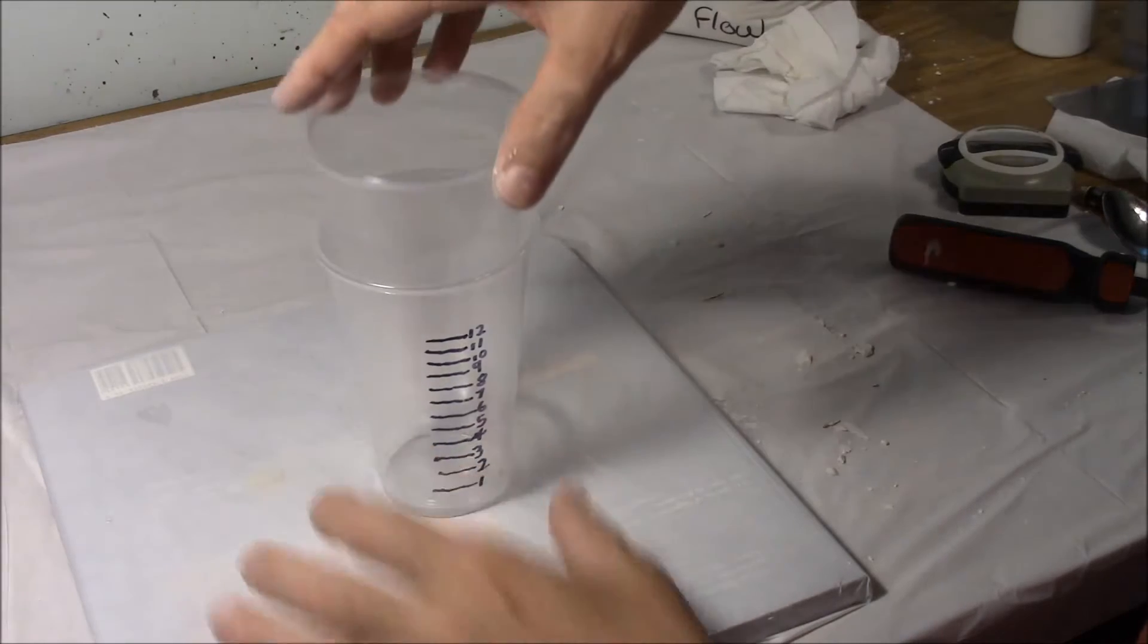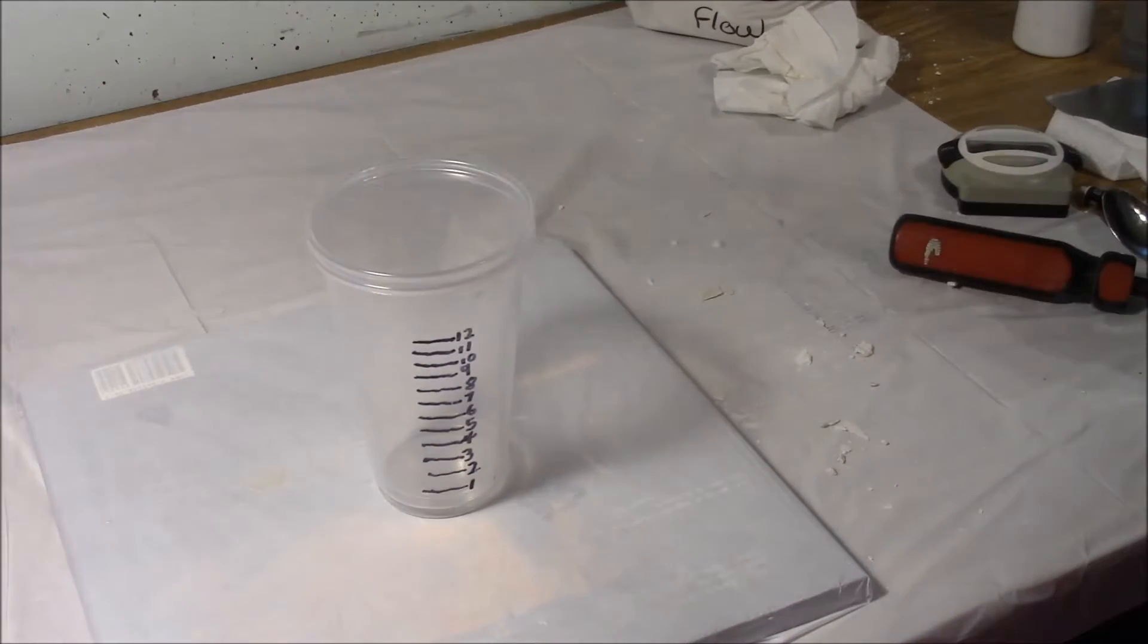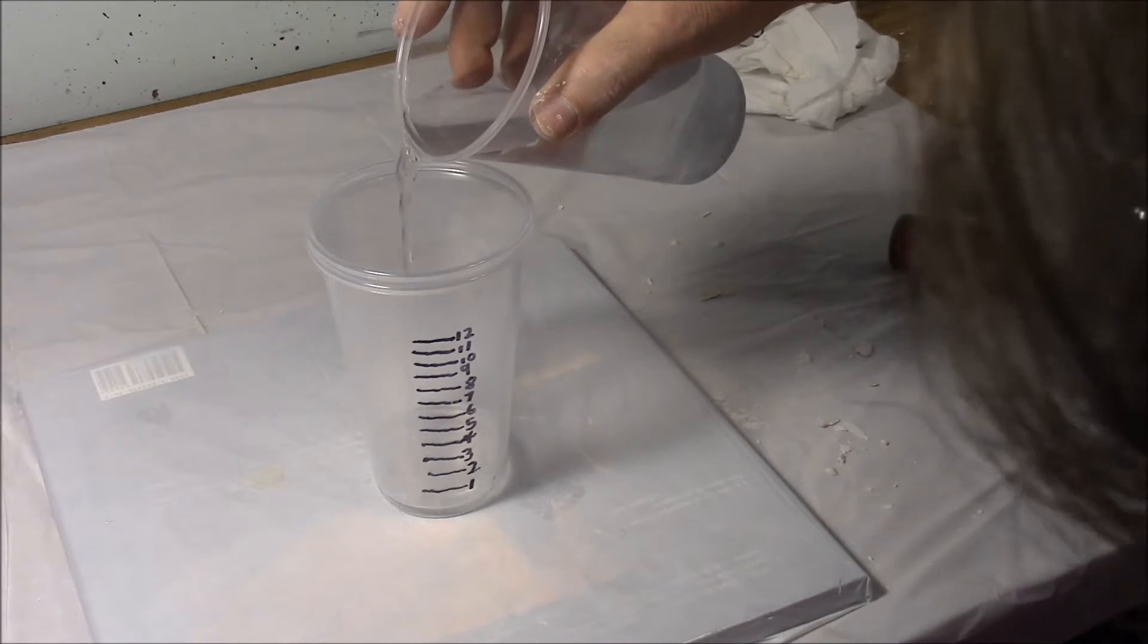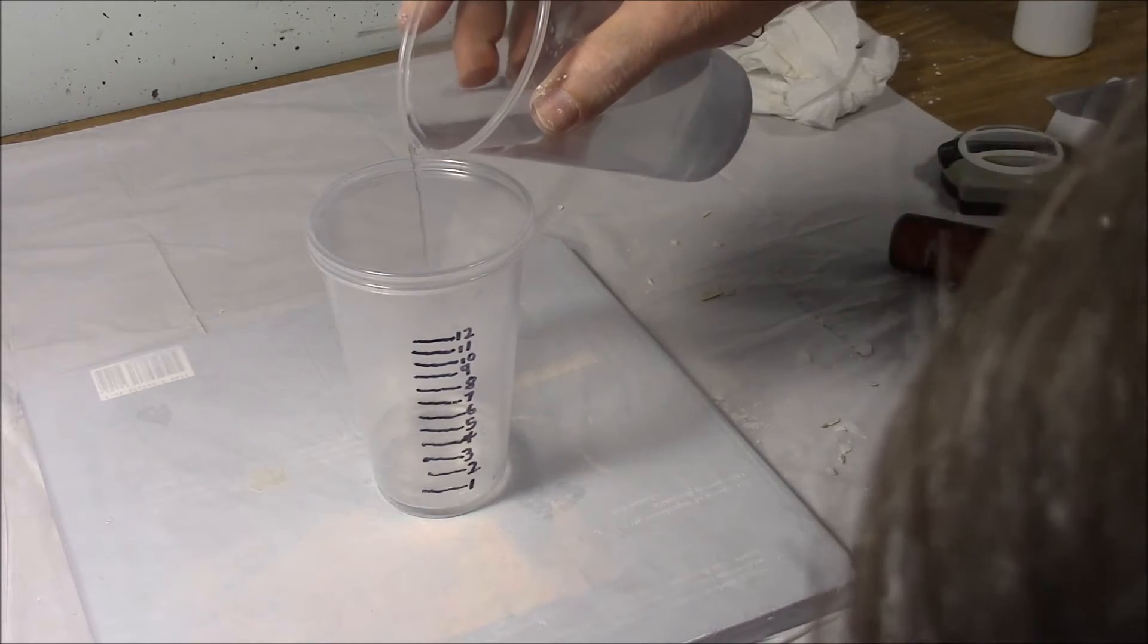Okay, this is a quick demonstration on mixing and pouring Flowstone from the Plaster Guys. I found for an average mold that you want to start with about 1 and 3/4 ounces of water.